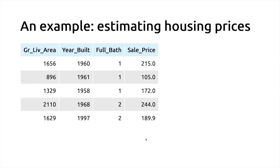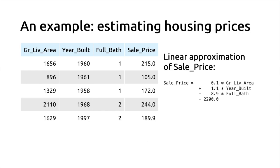In the context of linear models, we use a linear combination of the input variables to approximate the sale price as closely as possible. For instance, for the first row you take the first value for the living area and multiply it by 0.1, then take the year built value and multiply it by its coefficient, add those two terms, then take the full bath value of 1 multiplied by 8.9, subtract that from the running sum, and finally subtract the intercept — hopefully giving a good estimate of the sale price.